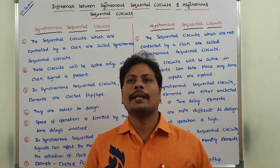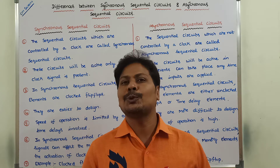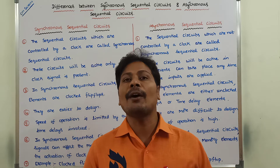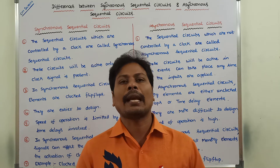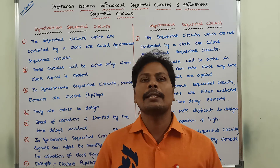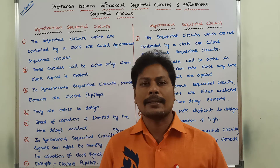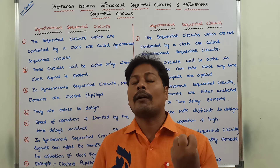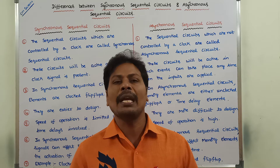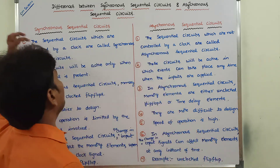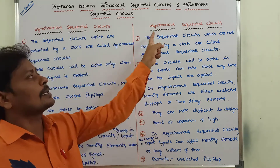Before going to the differences, first of all, sequential circuits can be classified into two types based on the timing of their signals. Sequential circuits can be classified into two types: one is synchronous sequential circuits, and the second one is asynchronous sequential circuits.